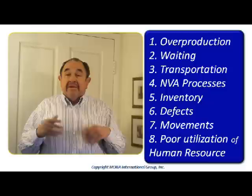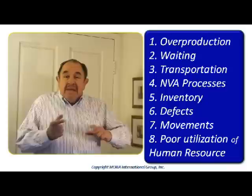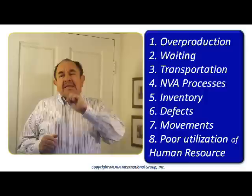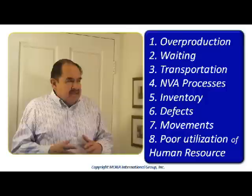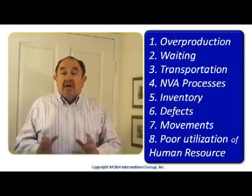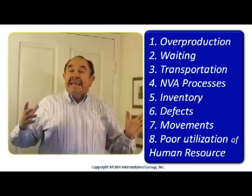Number one is overproduction. Every single time that we produce materials or sub-assemblies that are not immediately needed by our customer or by our next workstation — which is also our customer — every single time we do that, there is waste. The material gets deteriorated, it is accumulated unnecessarily, and we are investing workmanship in something not really needed immediately. Overproduction is always a very bad thing.